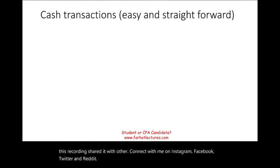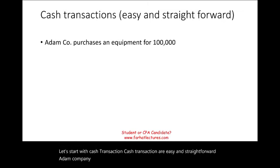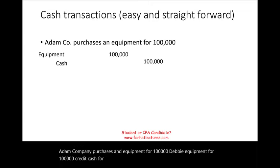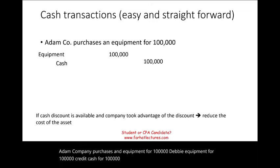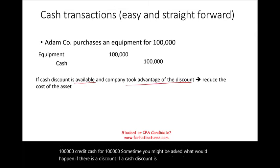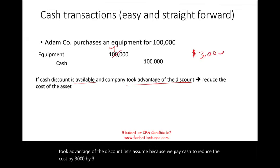Let's start with cash transactions — they are easy and straightforward. Adam Company purchases equipment for $100,000: debit equipment $100,000, credit cash $100,000. Sometimes you might be asked what happens if there's a discount. If a cash discount is available and the company took advantage of it — let's assume because we paid cash they reduced the cost by $3,000, or 3% — then our cost becomes $97,000.